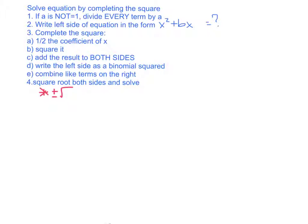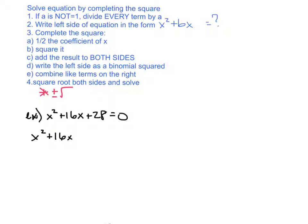Now we're going to solve an equation by completing the square — meaning we get all the way down to x equals. The example is: solve x squared plus 16x plus 28 equals 0. If I were solving by factoring, 14 and 2 multiply to 28 and add to 16, so the solutions would be x equals negative 14 and x equals negative 2. But sometimes answers don't come out that clean, so we'll show how to do it by completing the square. Since a equals 1, I write the left side as x squared plus 16x equals negative 28, leaving a space after 16x.